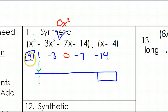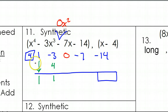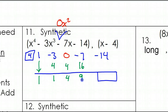Always multiply by what's in the box. So 1 times 4 is 4. Put these together — that's 1. 1 times 4 is 4 again. 0 plus 4 is 4. 4 times 4 is 16. Negative 7 plus 16 is 9. 9 times 4 is 36. Add those up, you get 22. So 22 is your remainder.